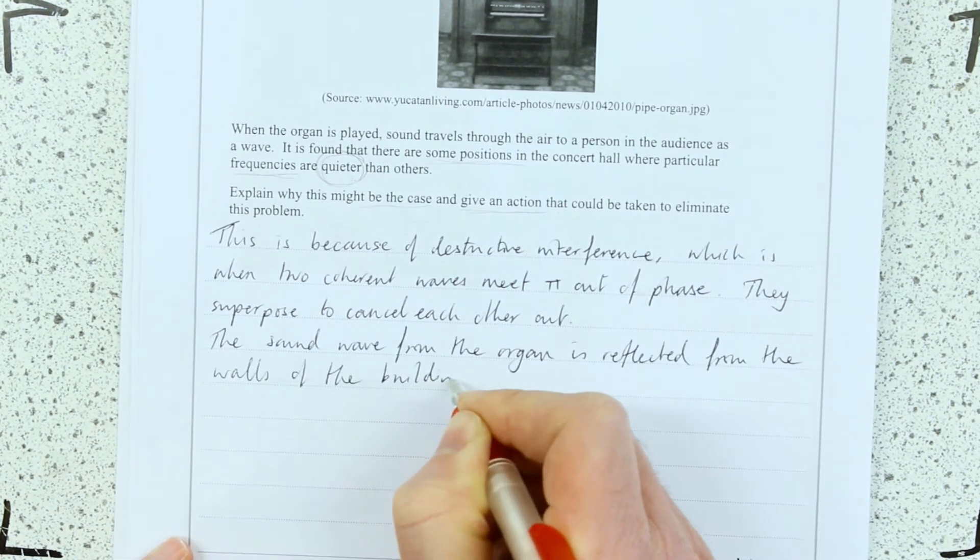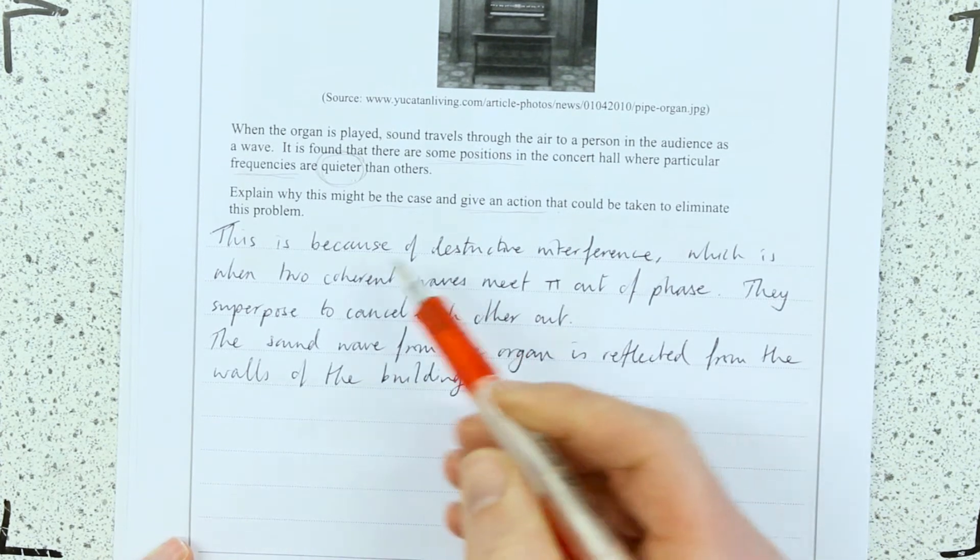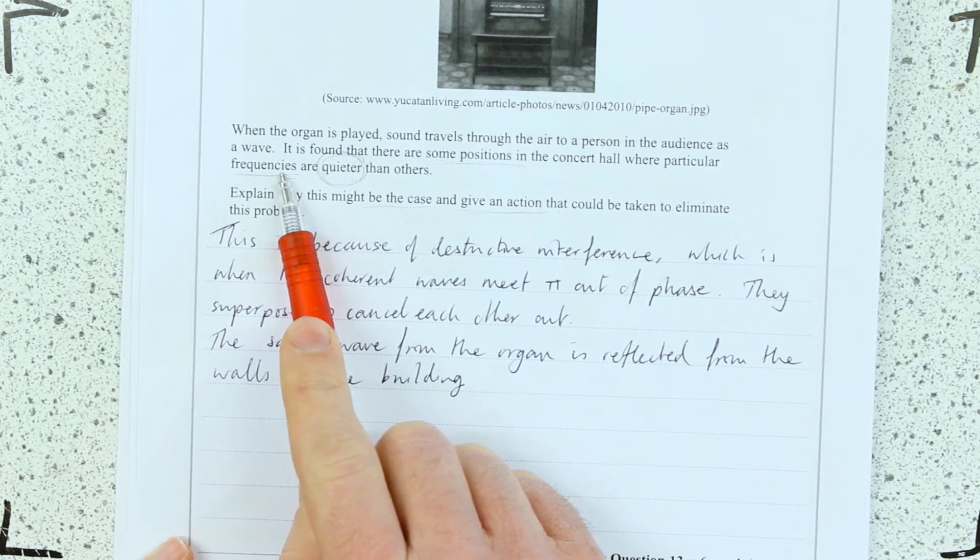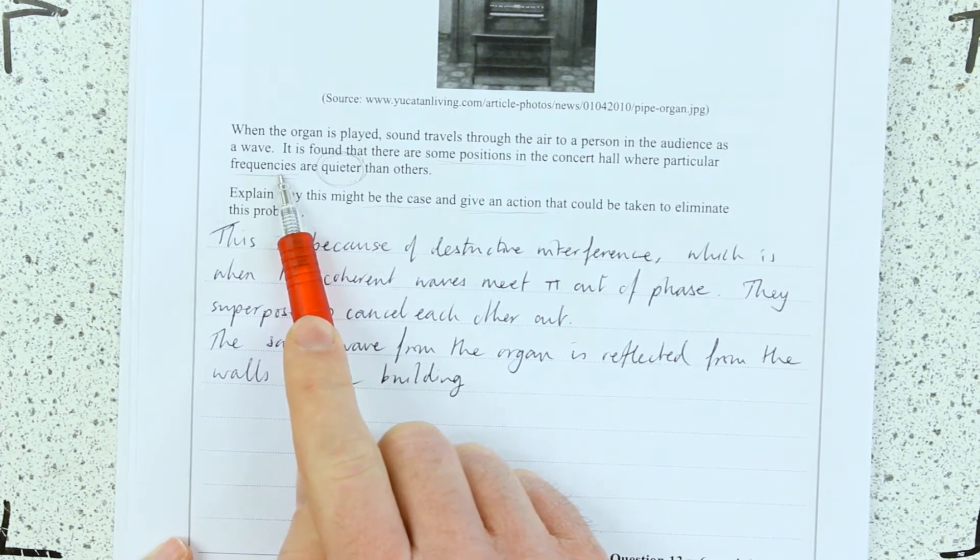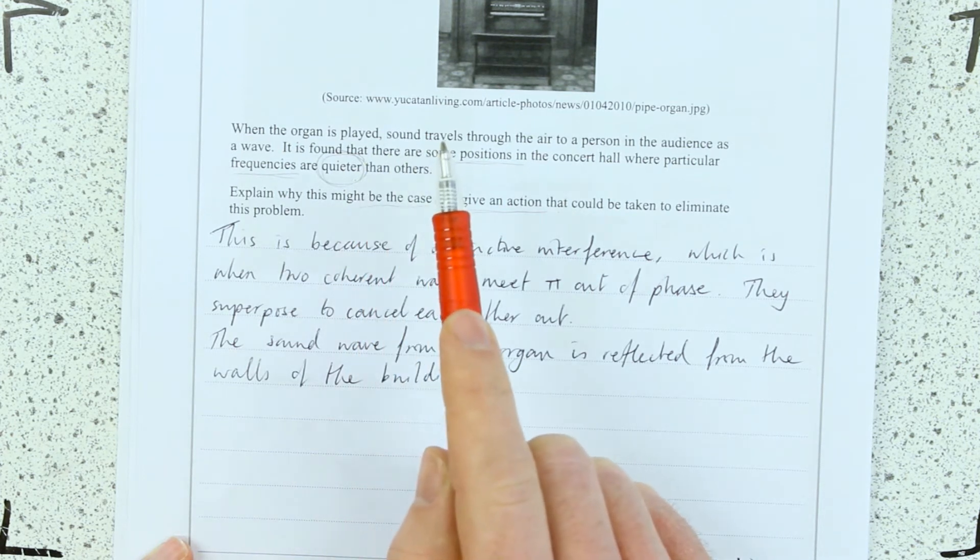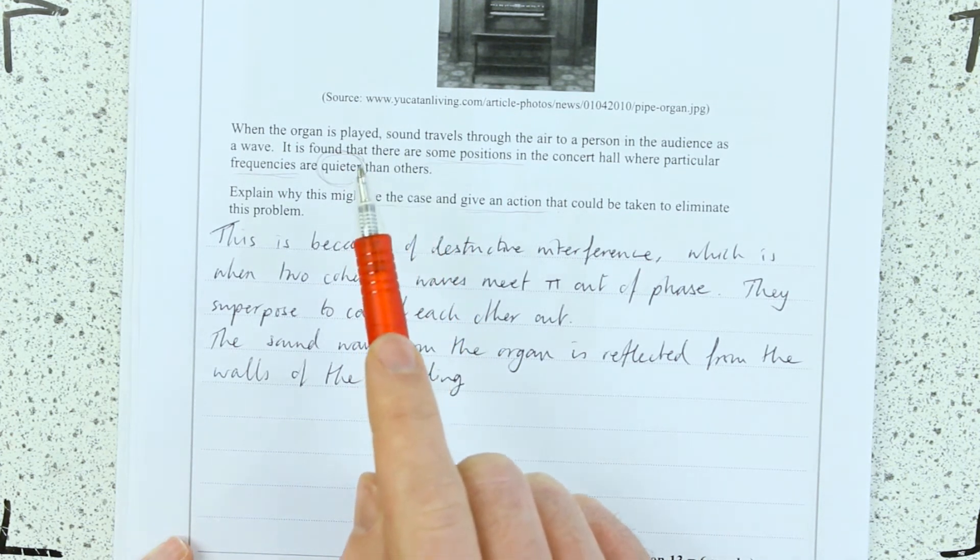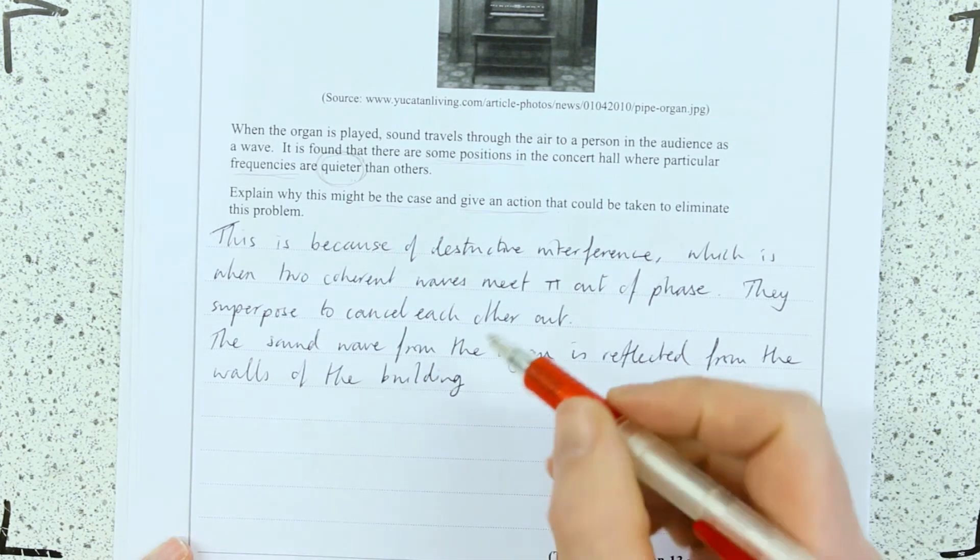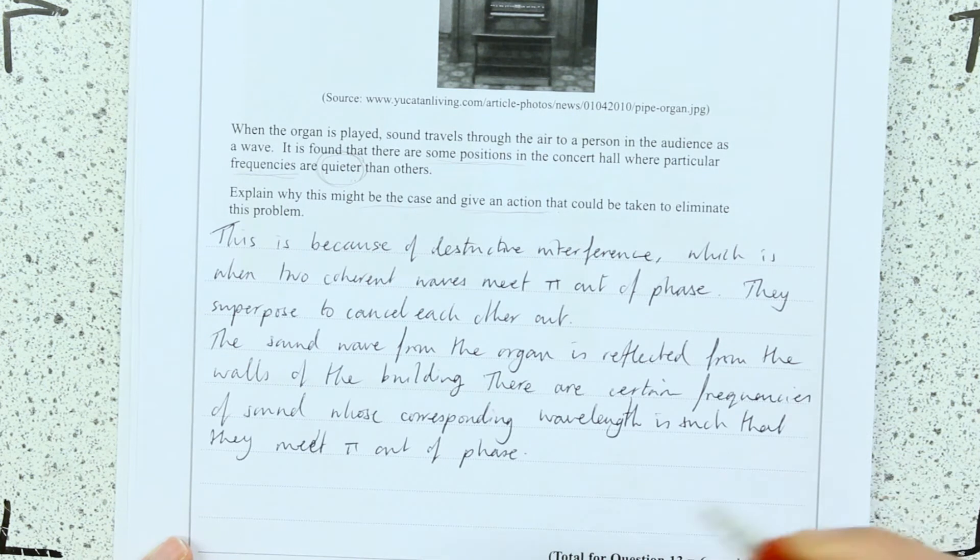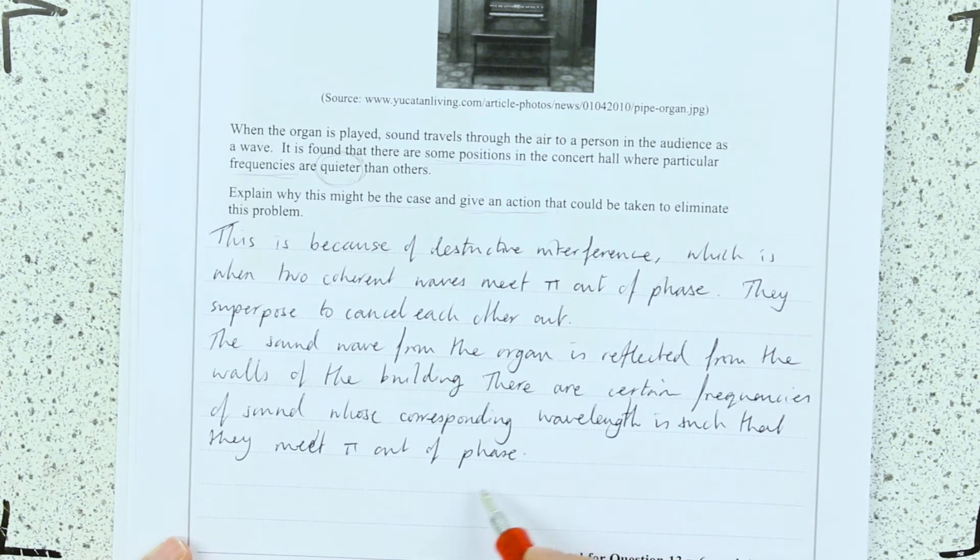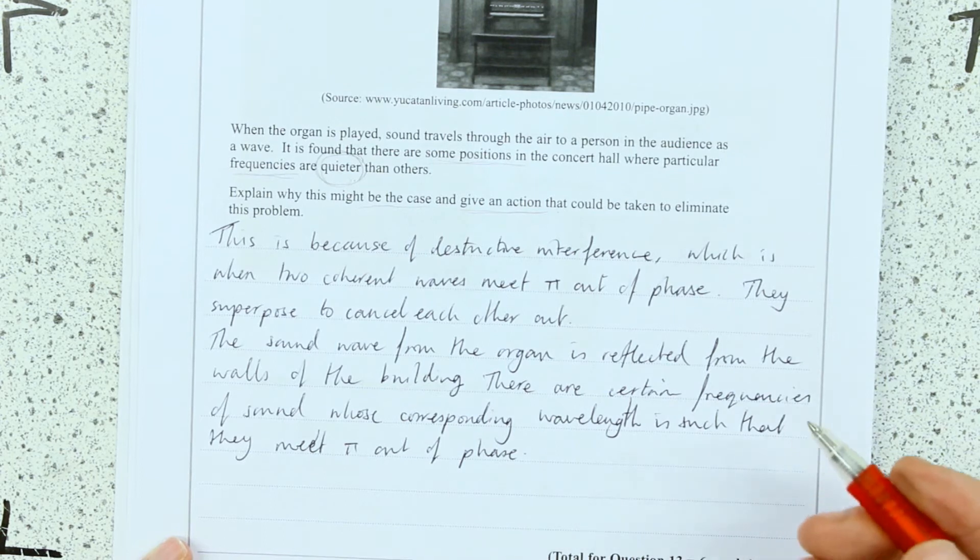And this seems a little bit too simple at the minute, so I'm going to look back at the question and think, well what else could say? Where particular frequencies are quieter than others. So there are some frequencies which have wavelengths such that they meet again, pi out of phase. These are the quiet parts. And I could also say there'll be points where they were in phase and these would be a bit louder.